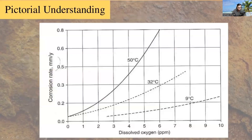As you can see the first graph is corrosion rate versus dissolved oxygen. The corrosion rate is expressed in terms of millimeter per year. The dissolved oxygen is particles per million. As the dissolved oxygen content increases...